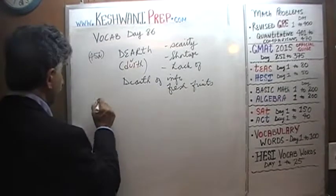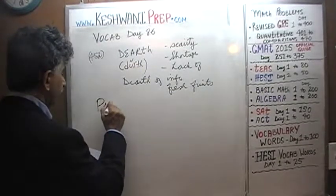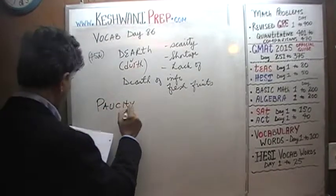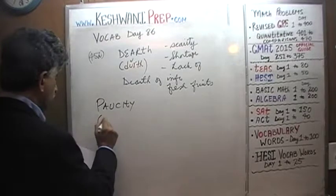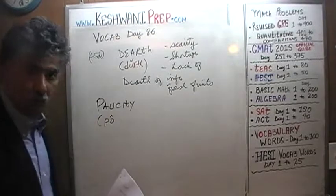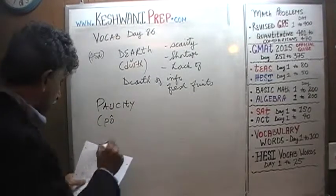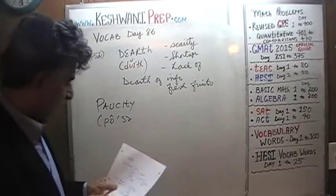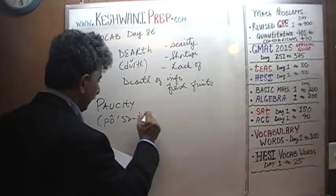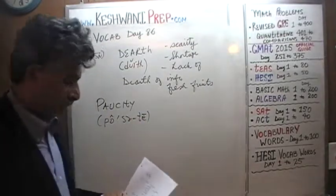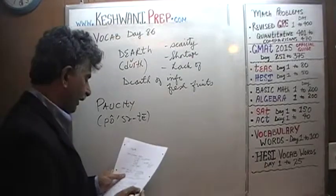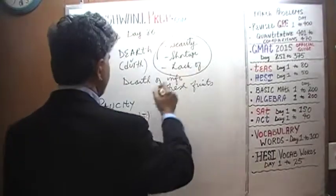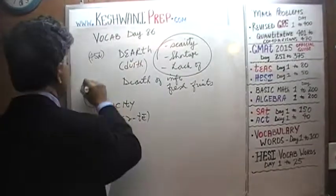The next word we are going to learn is paucity — P-A-U-C-I-T-Y. Paucity again means short supply, small quantity, fewness. It means the exact same thing as these words. These are synonyms — they mean the exact same thing.